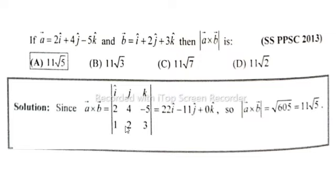4 times 3 is 12 minus 2 times minus 5, that's 10, so 10 plus 12 is equal to 22